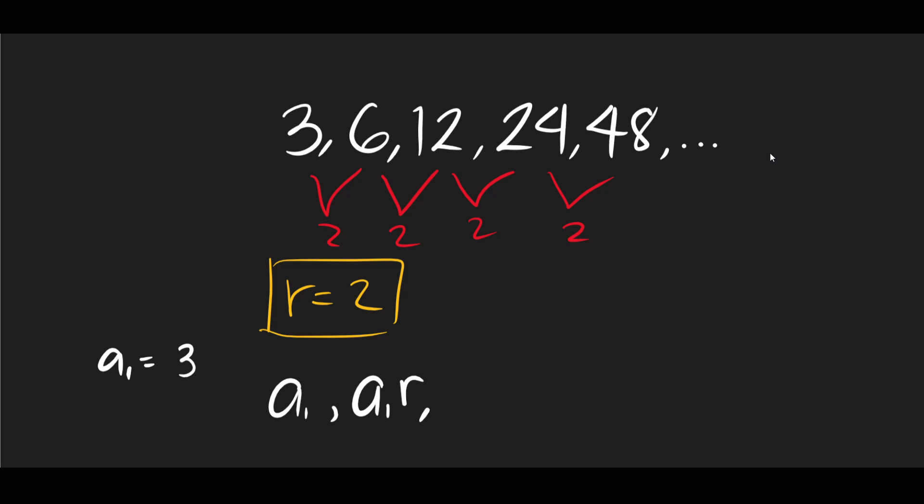So in the next term, 12, we can get that by multiplying a1 again by r squared. So we have 3 times r squared, 2 squared is 4, we get 12. Let's proceed to the next ones. We have here a1 r cubed. That's 3 times, what's 2 cubed? That's 8. So we get 24. So we see a pattern right here. So we have here a1 r raised to 4, and so on.